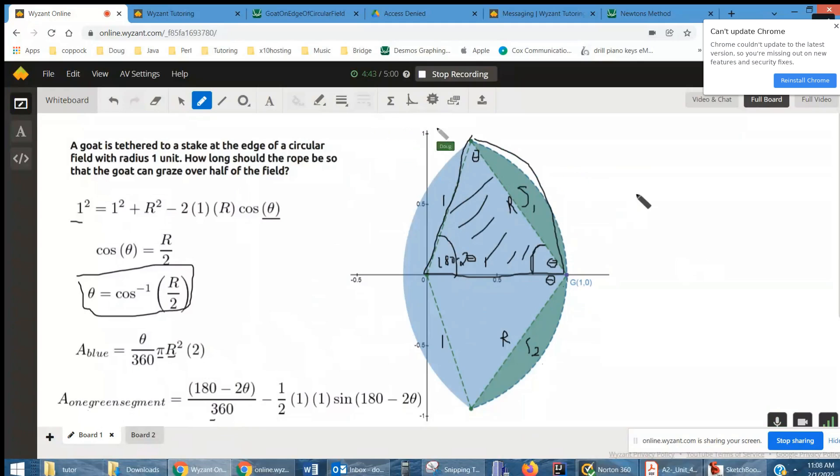And then we have to subtract the area of this triangle. Well, the area of that triangle, we can use area of a triangle given two sides, which are both one, is 1 half AB sine of the angle between them. I'll use alpha. So that's the area of the triangle. And of course, that's the area of one green segment. We'd have to double that.